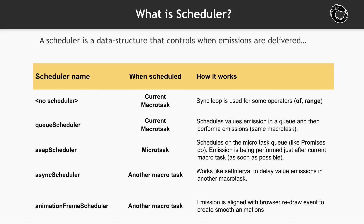Let's take a look at the official definition from the RxJS GitHub repo: a scheduler is a data structure that controls when emissions are delivered. It means that we can emit data synchronously if we don't use a scheduler or use the queue scheduler. We can schedule emission in a MicroTask just after the current MacroTask if we use the asap scheduler. When we use the async scheduler, data will be emitted in another MacroTask at once or with some specified delay. Also, data emission can be aligned with the repaint browser event if we use the animation frame scheduler.